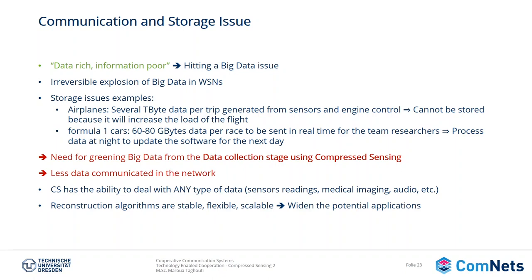These issues push for the need for greening big data from the data collection stage. Greening it can be tackled from a compressed sensing perspective: compressed sensing can help in reducing this huge amount of data, resulting in less data communicated in the network and less energy consumption. Compressed sensing has the ability to deal with any type of data — sensor readings, medical imaging, and so on. Whatever data we are harvesting could be compressed, helping with the data deluge. The reconstruction algorithms are stable, flexible, and scalable, and could be used for any type of application, widening the potential use of compressed sensing.